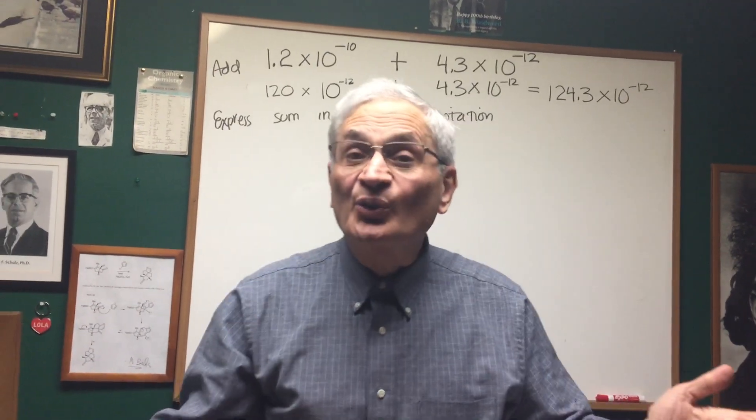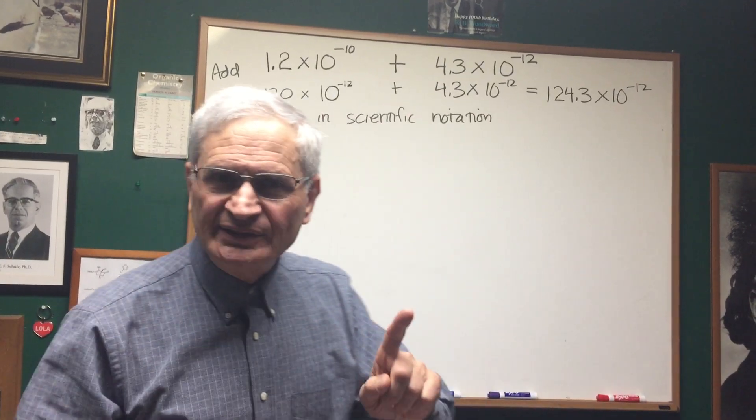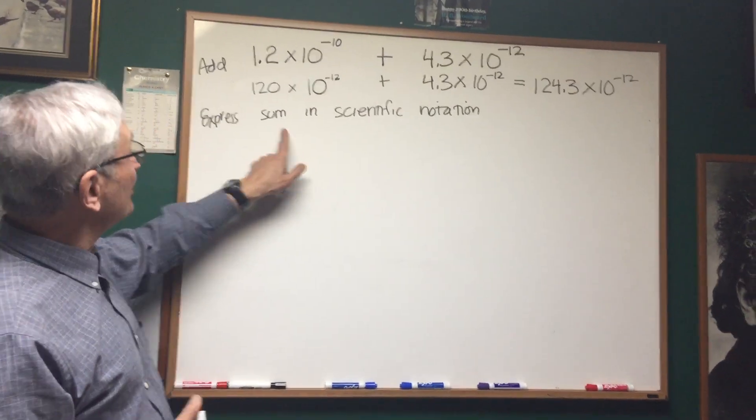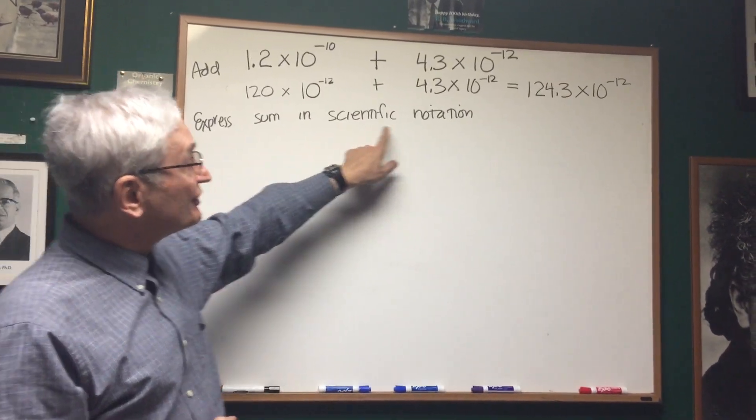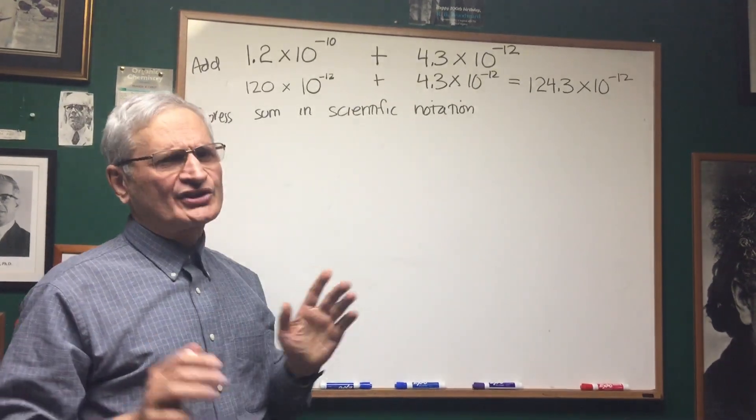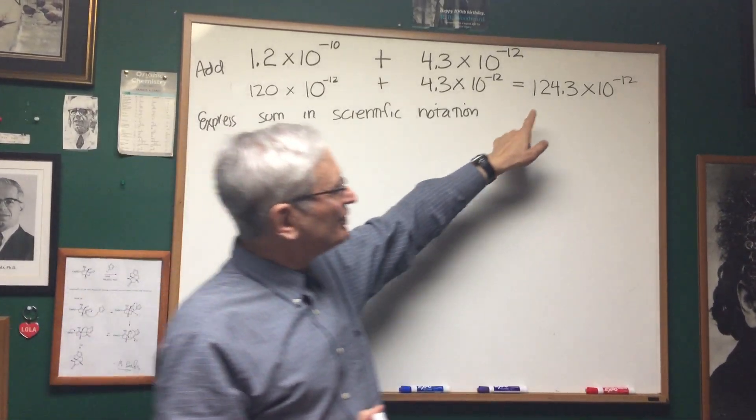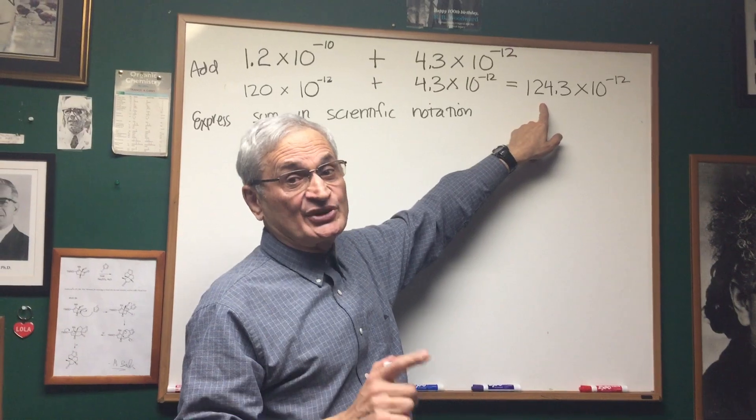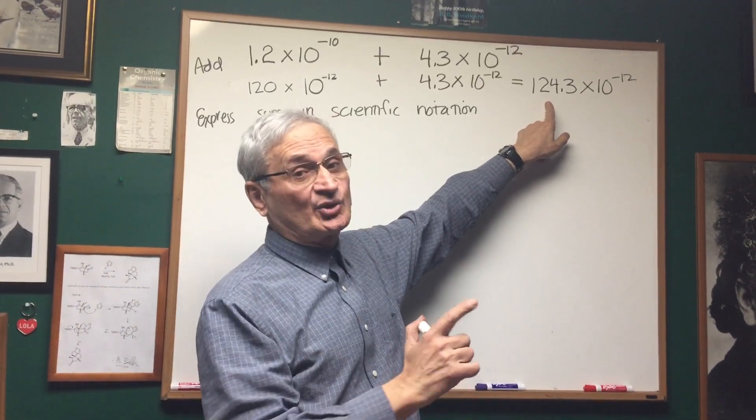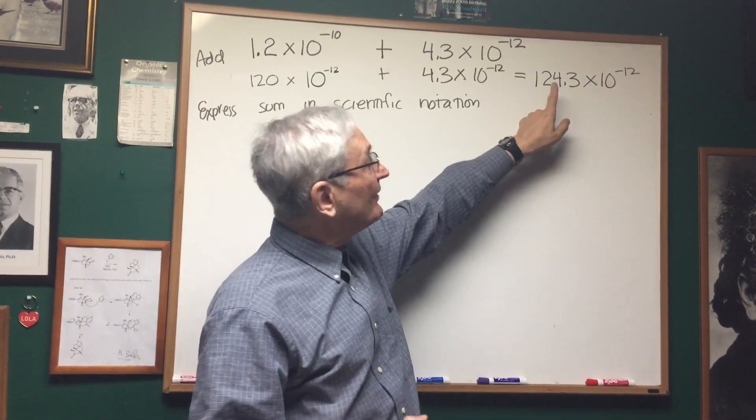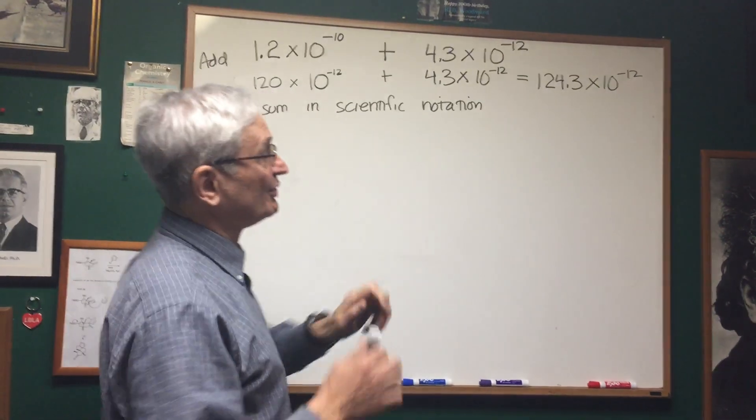Correct. Right? Not quite. Because if you read the question, it says express the sum in scientific notation. Well, there's a certain form for scientific notation. The first number has to be strictly less than 10 and greater than or equal to 1. And that's not the form of scientific notation.